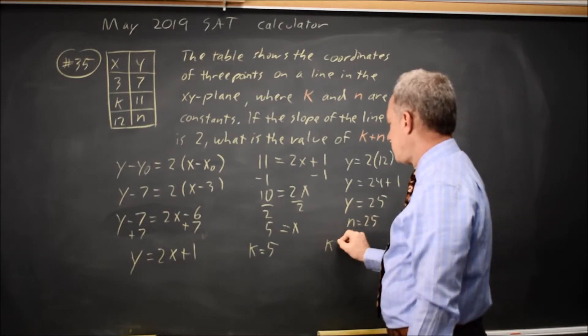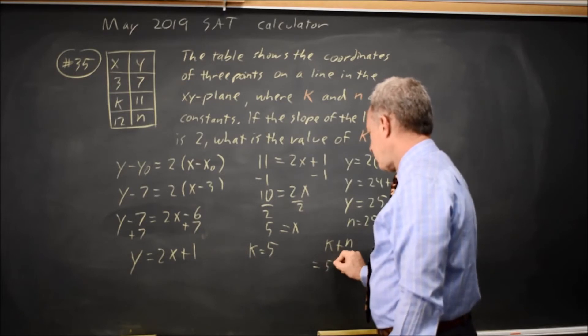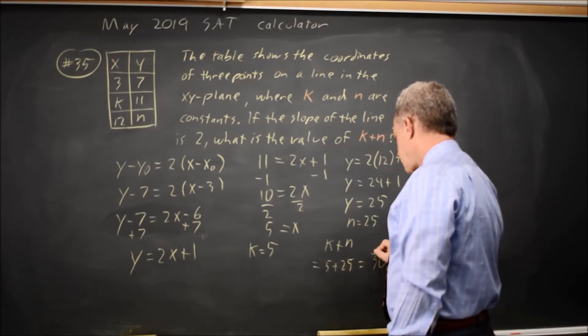So k plus n is equal to 5 plus 25 equals 30.